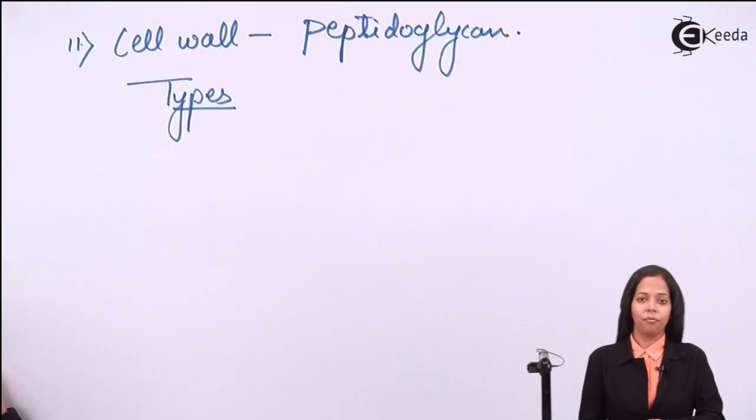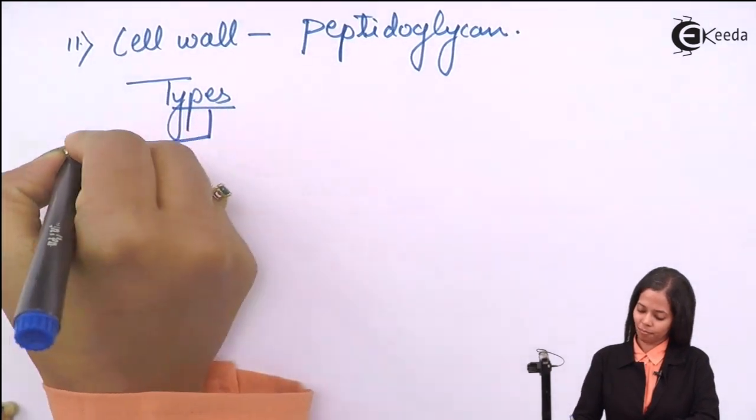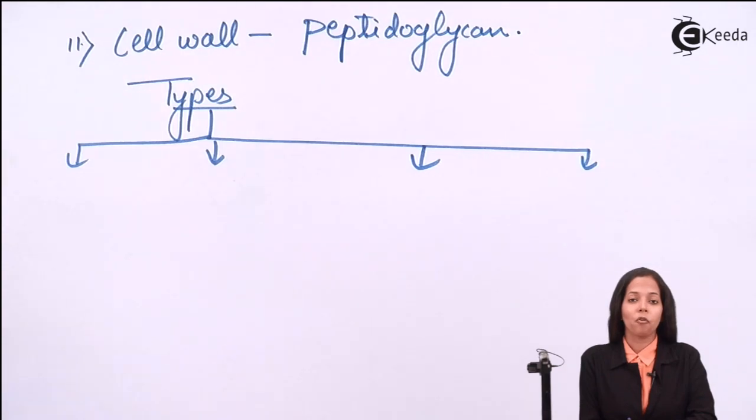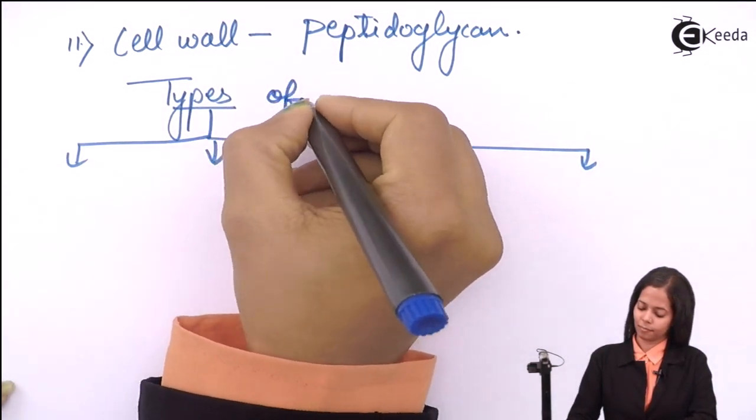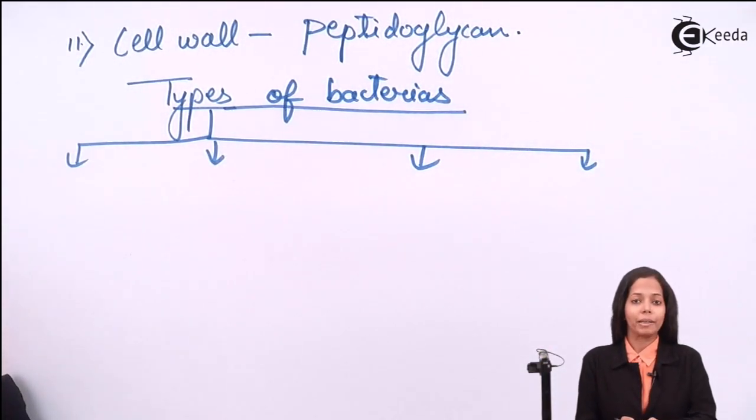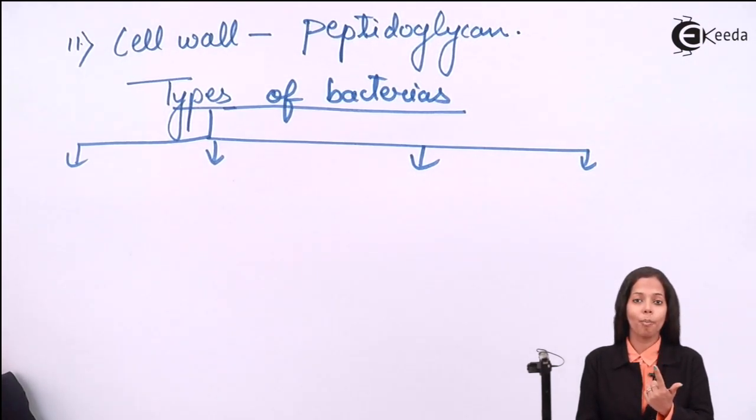The last thing which we are going to study about Monera is what are their types. There are total four types of Monera, or indirectly we say there are four types of bacteria. The name of the four types of bacteria are Archaebacteria, Eubacteria, Cyanobacteria and Actinomycetes.